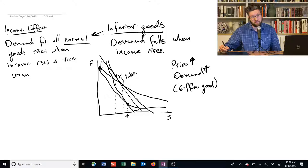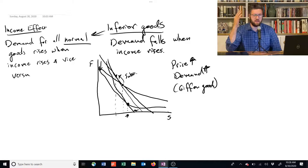And you can see that it behaves normally in the substitution, like the substitution effect is sort of as we expect. But the inferior good nature of it means that when we can't afford as much, we increase our consumption.